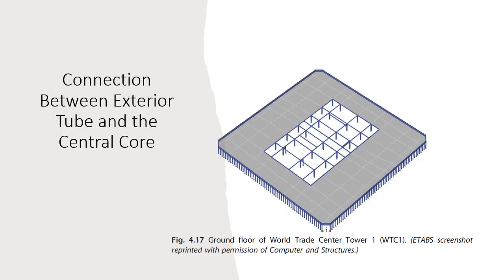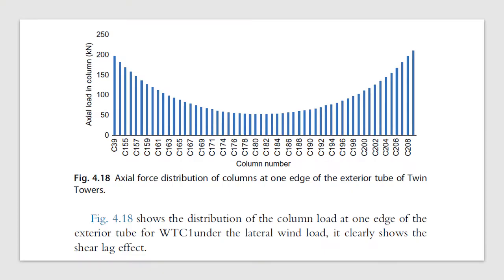Connection between the exterior tube and the central core. Figure 4.18 shows the distribution of column load at one edge of the exterior tube for the World Trade Center. Under lateral wind load, it clearly shows the shear lag effect. The reason for the shear lag and non-linear stress distribution is that the beams have their own stiffness; with different stiffness values, most of the load is carried in the corner columns.